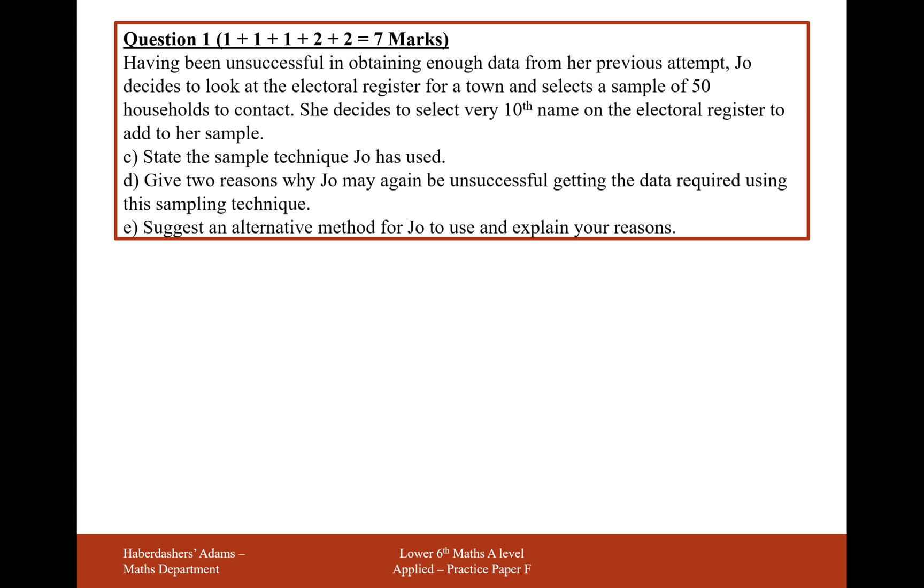Part C. Having been unsuccessful in obtaining enough data in her previous attempt, Joe decides to look on the electoral register for a town and selects a sample of 50 households to contact. She decides to select every tenth name on the electoral register to add to her sample. State the sampling technique Joe has used.